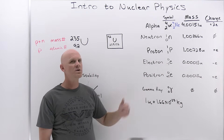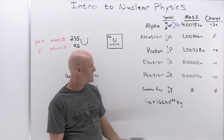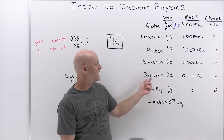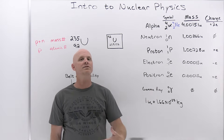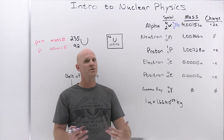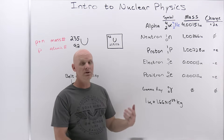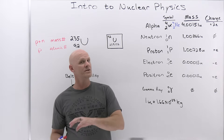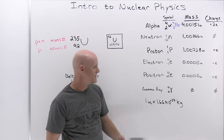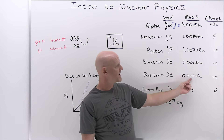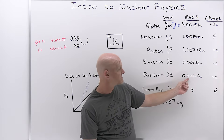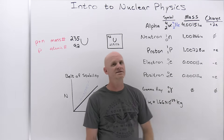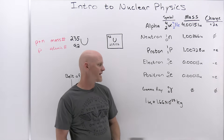Moving on to the positron, which is likely to be new if you haven't had a full year of general chemistry. The positron is effectively a positively charged electron — it is the antiparticle of the classic electron. It looks and behaves like an electron, but the key difference is it's positively charged instead of negatively charged. It still has a mass of 0.00015 unified mass units, but its charge is positive 1.6×10⁻¹⁹ Coulombs.